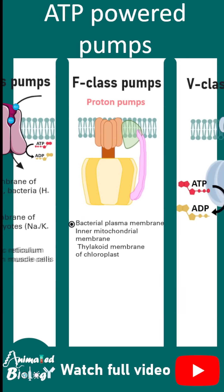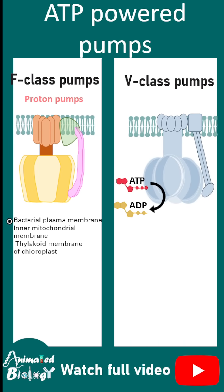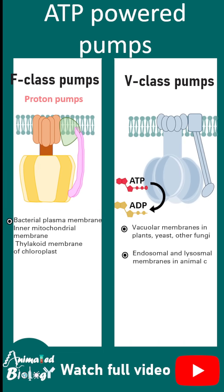Then we talk about V-class pumps, which require ATP hydrolysis for function. They are also proton pumps, found in vacuolar membranes, endosomal and lysosomal membranes. Their job is to pump in protons and acidify the content of the vesicle.